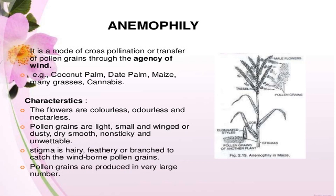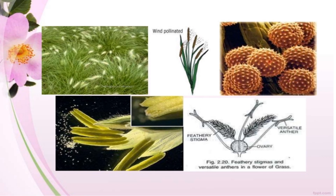The stigma is hairy, feathery, or branched to catch the wind-borne pollen grains. Pollen grains are produced in large quantities, since much of it is blown away and gets wasted. That is why pollen grains are produced in very large numbers. This slide shows the process of wind pollination.